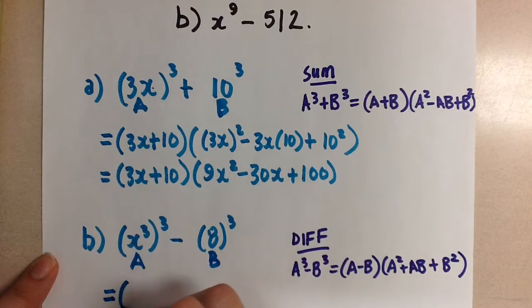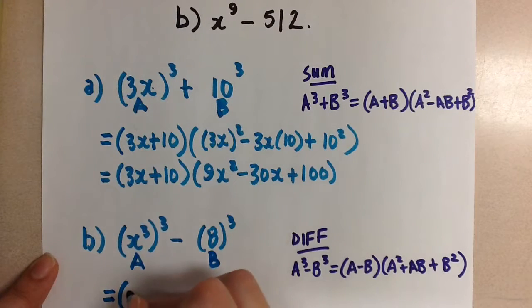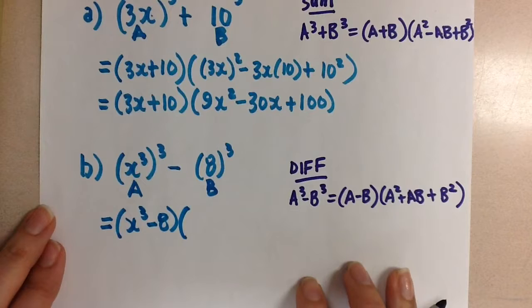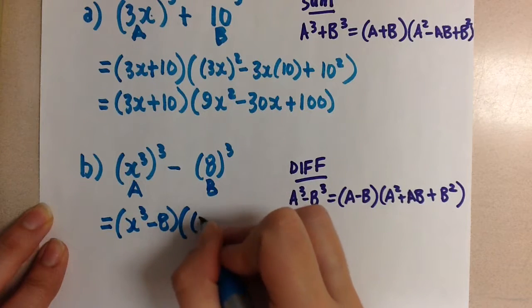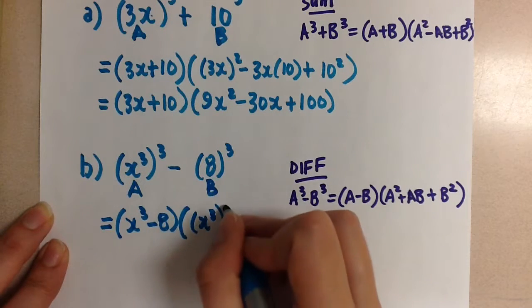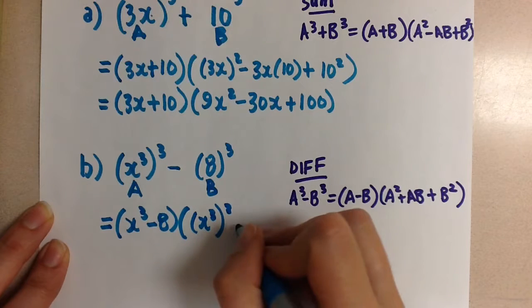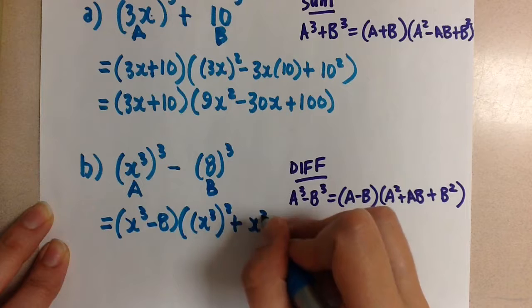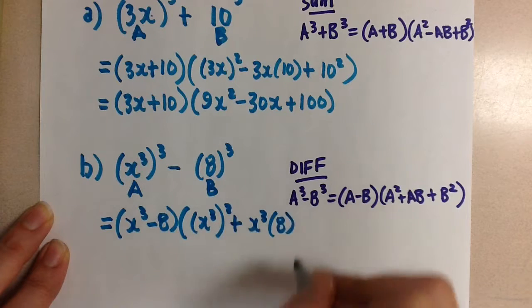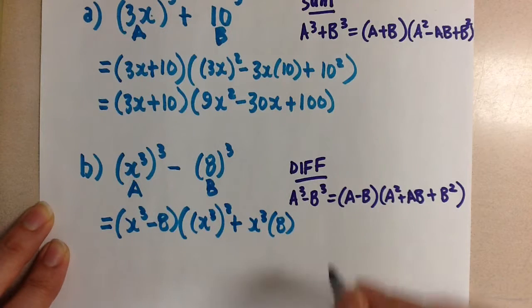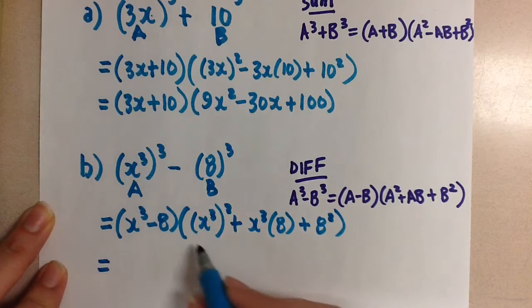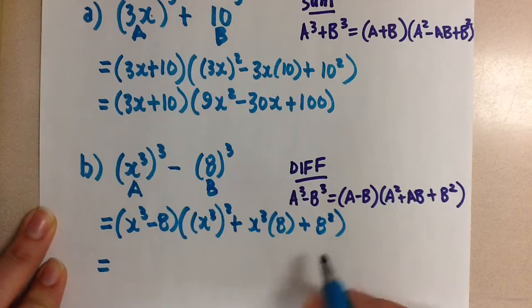So now let's sub in those values. The first one, we get x cubed minus 8 times x cubed all squared plus x cubed times 8 plus 8 squared.